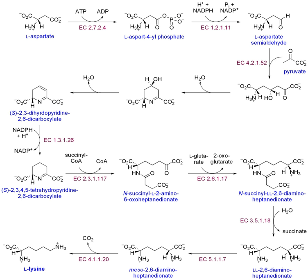Some of these biosynthetic pathways are located within a single cellular organelle, while others involve enzymes that are located within multiple cellular organelles. Examples of these biosynthetic pathways include the production of lipid membrane components and nucleotides. The prerequisite elements for biosynthesis include precursor compounds, chemical energy, and catalytic enzymes which may require coenzymes.